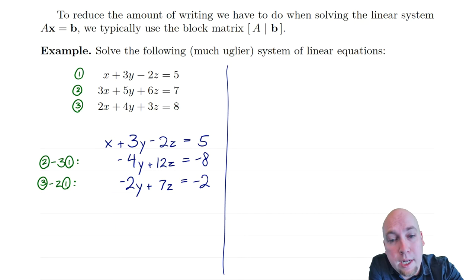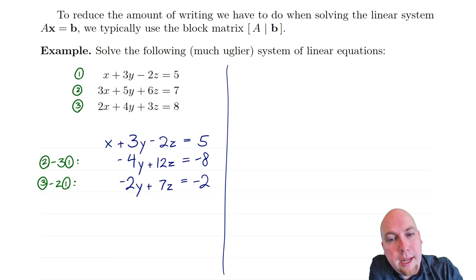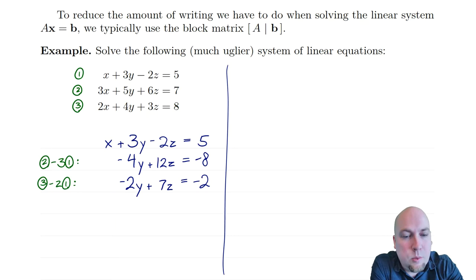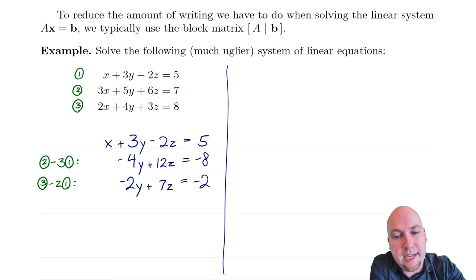For equation three, I want to subtract double equation one to eliminate the 2x: 2x minus 2x gives 0x. Then 4y minus 6y gives minus 2y; 3z plus 4z — again watch the double negative — gives 7z; and 8 minus 10 gives minus 2. So this is the new system of equations after combining equations, and I'm a little bit closer to triangular form, but not quite there yet — I still need to get rid of this minus 2y term.